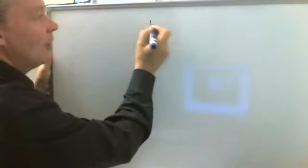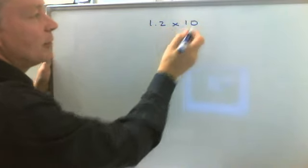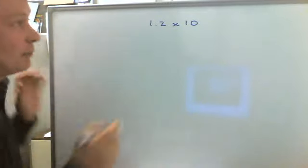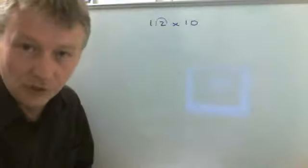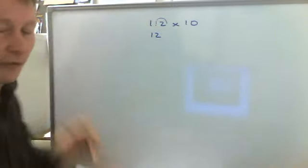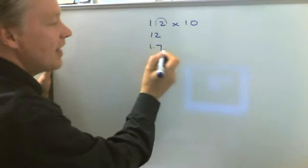What I mean by that is, let's say we have 1.2 and we're going to multiply that by 10. Well, in order to do that, we simply move the decimal point one place towards the right. So the answer would be then 12.